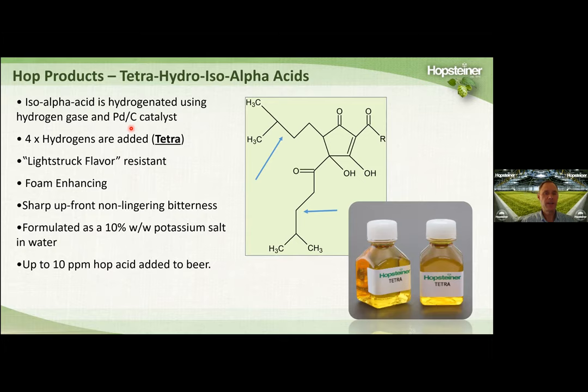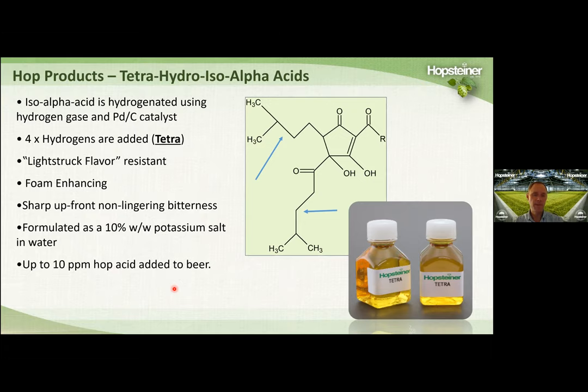Tetra is the hydrogenation of iso-alpha acids using hydrogen gas and palladium and carbon catalyst — adding four hydrogens, hence the name Tetra. It's light struck flavor resistant, foam enhancing, and enhances lacing. Tetra gives an upfront, non-lingering bitterness. It's formulated as a 10% potassium salt solution in water and can be used up to concentrations of about 10 ppm. For foam and lacing, you can use as little as four to five ppm. Keep in mind that for every ppm of Tetra you add, you're adding about one IBU of organoleptic bitterness.